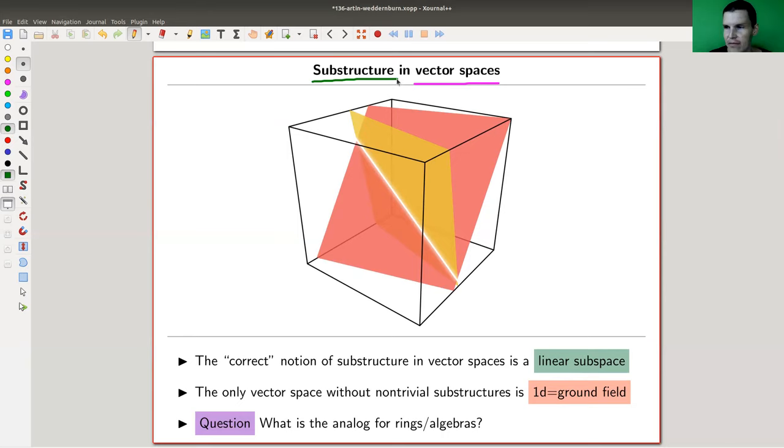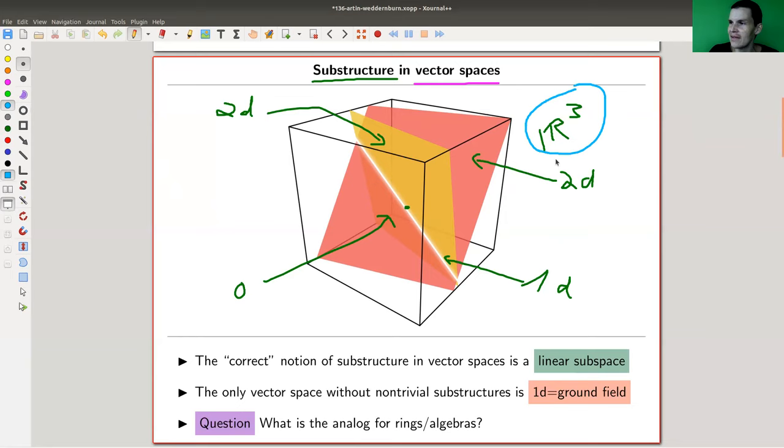So for vector spaces, the correct notion of a substructure is a linear subspace. My parent vector space is R³, and I have several subvector spaces here. I have a two-dimensional one, which is a plane, here's another one, and the intersection of them is a 1D subspace. And then there's the zero-dimensional subspace, and the vector space itself. I call these trivial, so I'm only interested in non-trivial substructures.